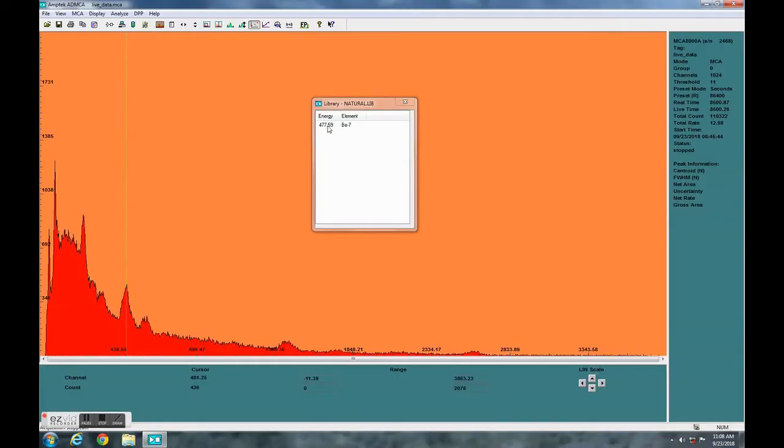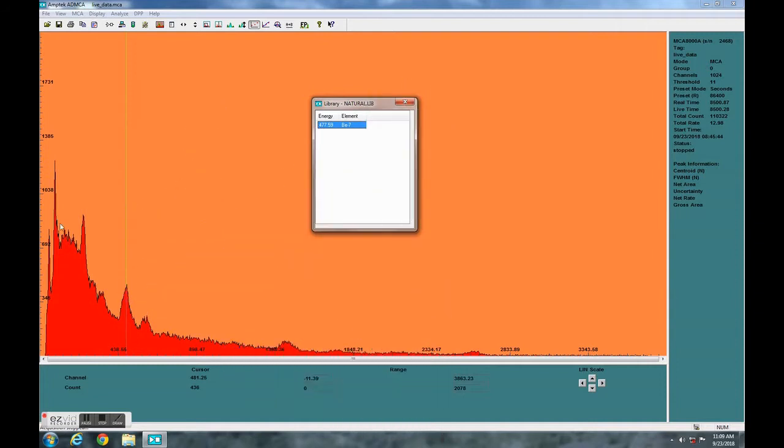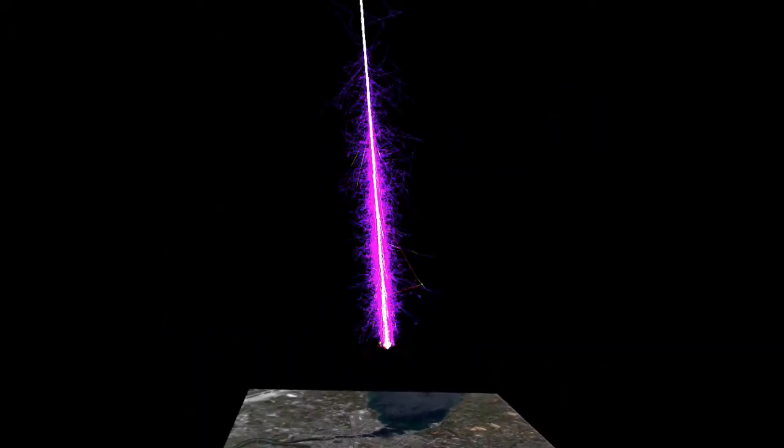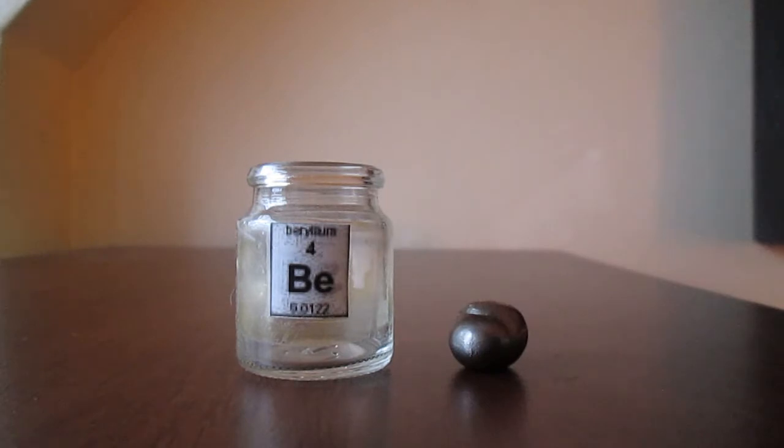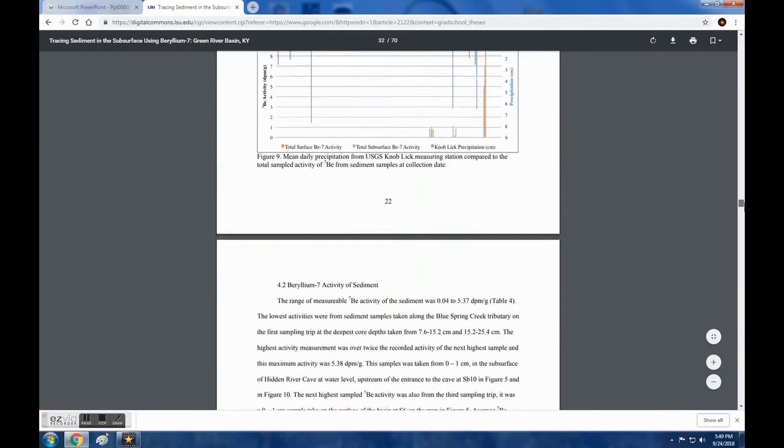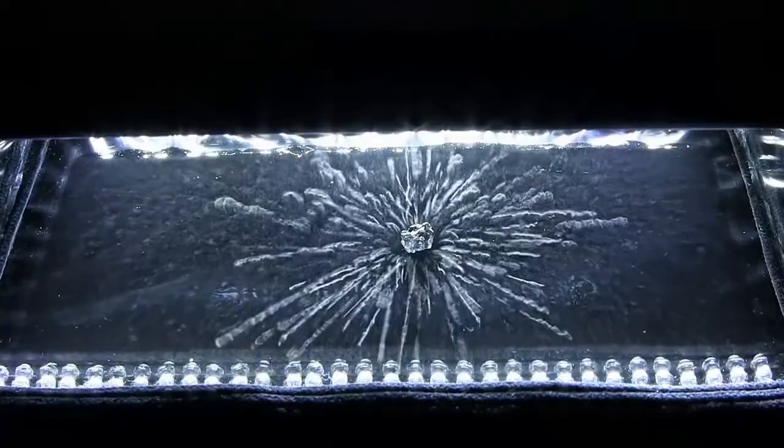Now, the interesting isotope I was surprised to find is this one, this peak right here - this is Beryllium-7. Beryllium-7 is fairly common and is created in the upper atmosphere when cosmic rays interact with nitrogen and oxygen. It has a half-life of 53 days and is sometimes used to determine the age of sediments and deposits.